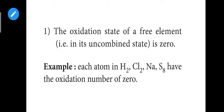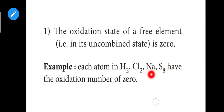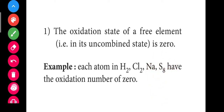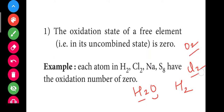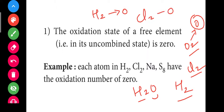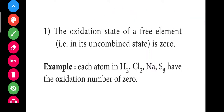The first rule: the oxidation state of a free element is zero. For example, H2, Cl2, Na, or S8 — if they are not in any compound, they are in a free state. So H2 is 0, Cl2 is 0. A free element means an element that exists freely on its own, so its oxidation state is 0.